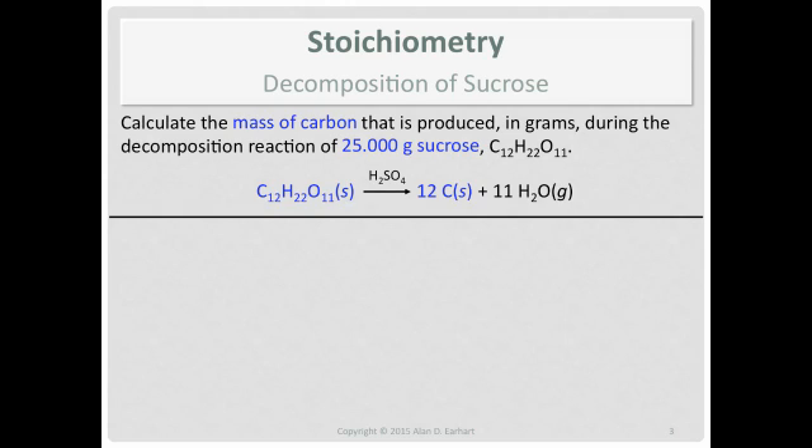Now if you're wondering what about the water, well we're ignoring the water in this calculation. You focus on two different substances from the balanced chemical equation. You can't go directly from mass of sucrose to mass of carbon, so we need extra information. If you have the mass of sucrose, what can you calculate in one step? You can go from grams to moles, and to do that you need the molar mass of sucrose.